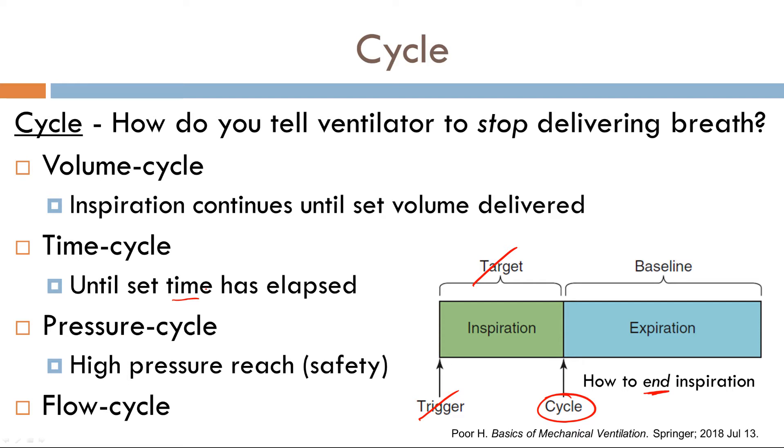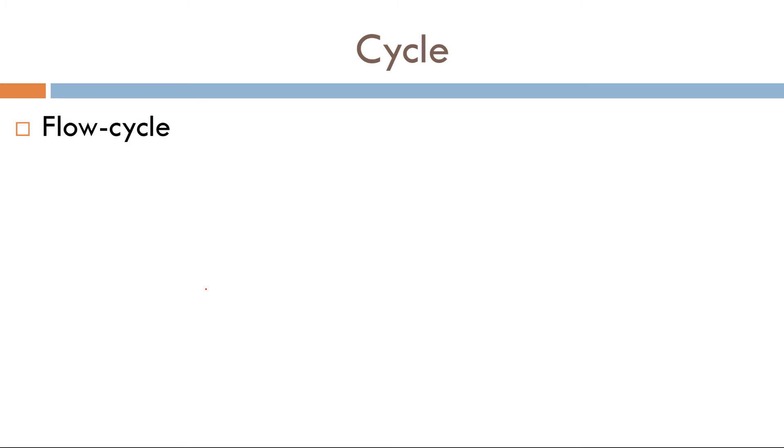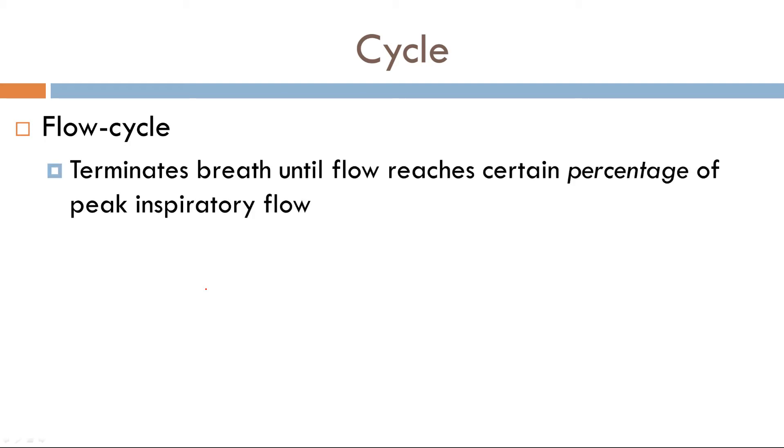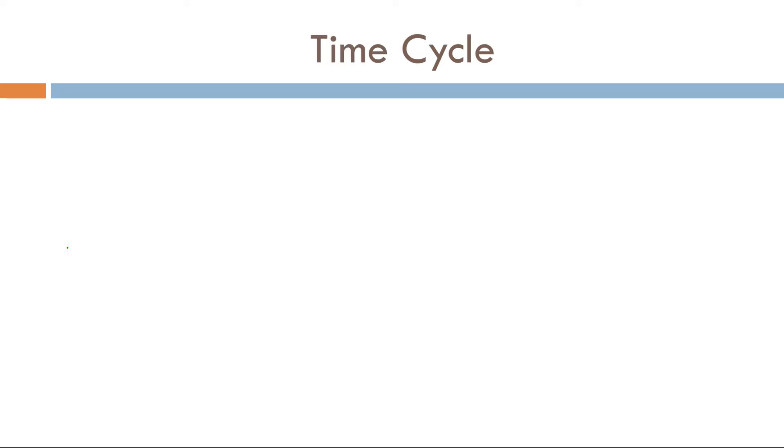And finally is flow cycle. Now flow cycle is conceptually the most difficult to understand, so I'll define it, but we'll go in depth in it in a bit. Flow cycle terminates a breath until the flow reaches a certain percentage of the peak inspiratory flow.